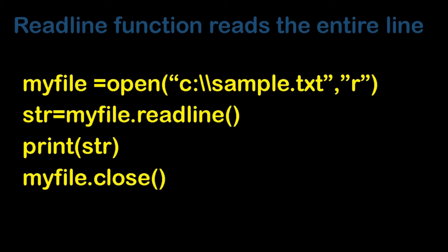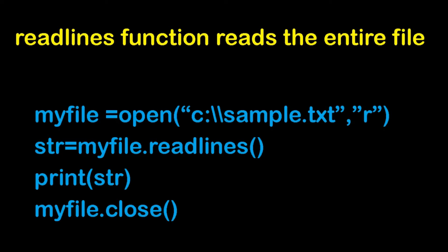The readline() function reads one entire line. my_file_handler = open('sample.txt', 'r') read mode. str = my_file_handler.readline(). Print str. my_file.close(). For multiple lines, use readlines(). my_file = open() in read mode. str = my_file.readlines() — this reads all lines.